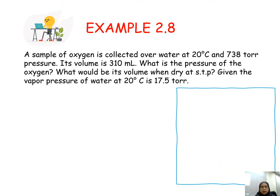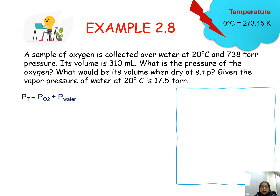Example 2.8: A sample of oxygen is collected over water at 20 degrees Celsius and 738 Torr pressure. Its volume is 310 ml. What is the pressure of the oxygen and what would be its volume when dry at STP? Given the vapor pressure of water at 20 degrees Celsius is 17.5 Torr. The total pressure is 738 Torr; subtracting the vapor pressure of water (17.5 Torr) gives the partial pressure of oxygen as 720.5 Torr.